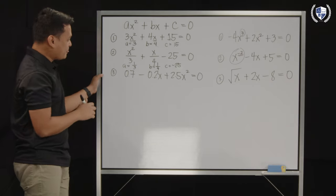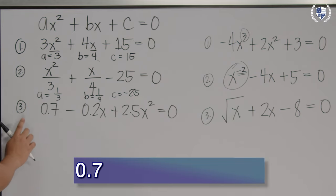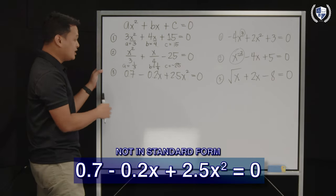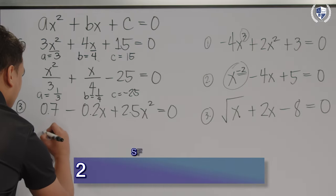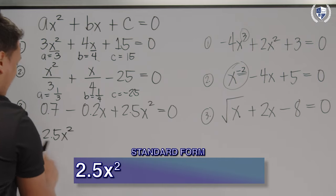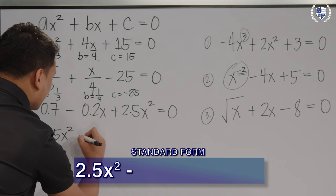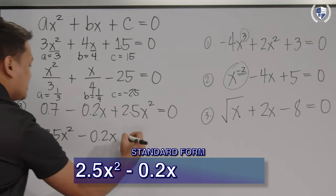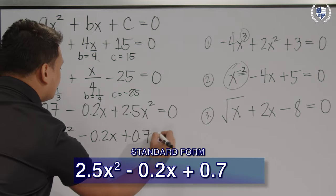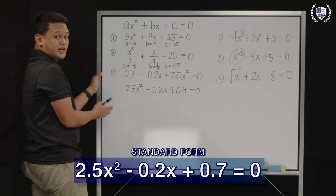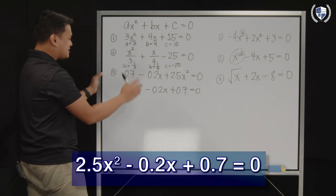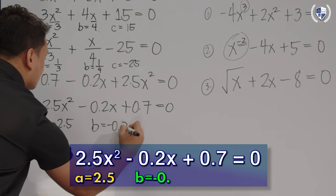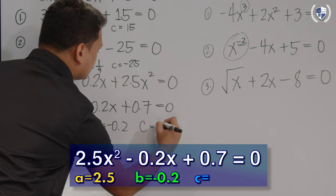For our third example, it's not similar to our first two examples because the third one is not written in standard form. But we can write it in standard form. How? By simply rearranging our terms. So, let's write first 2.5x² because this one is the quadratic term. Second one is the -0.2x term. And the last one is the constant term, or the lone number, which is +0.7 and then equate it to 0. Now, since it's written in standard form, we can easily get the values of a, b, and c. a here is 2.5, b here is -0.2, and c is equal to 0.7.